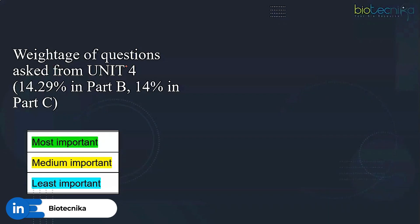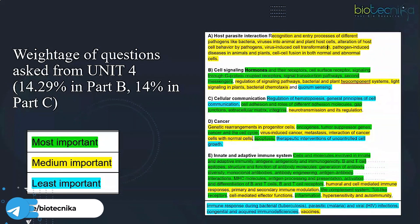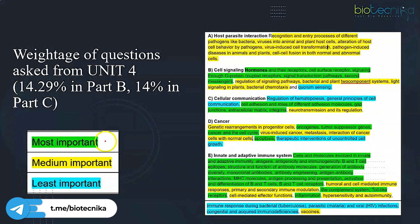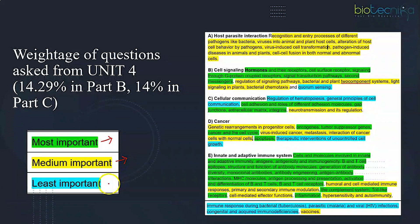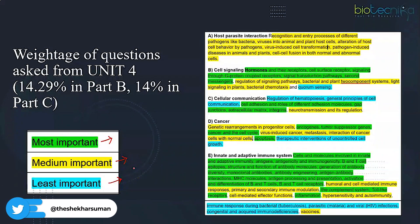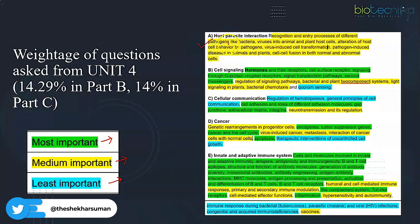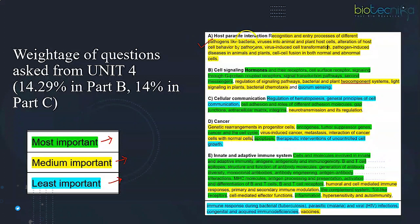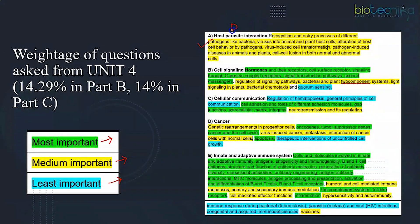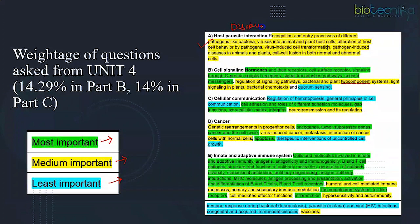Now let's have a look into the important topics from each subunit. As you can see, the green color indicates most important, yellow medium important, and blue is least important. To begin with, we have the first subunit host parasite interaction. As I told you initially, it is related to diseases - bacterial disease, viral disease, their causative agents, pathogens and their host. Majority of times you can see match the following kind of questions. Four marks questions do come from here.